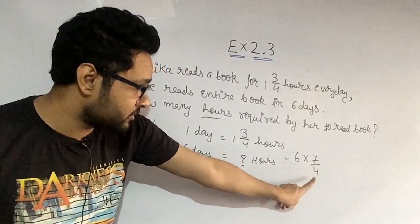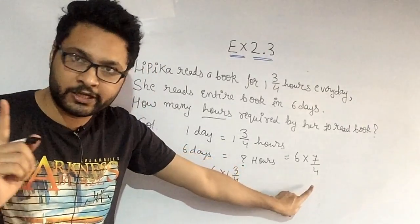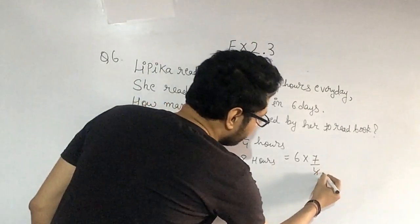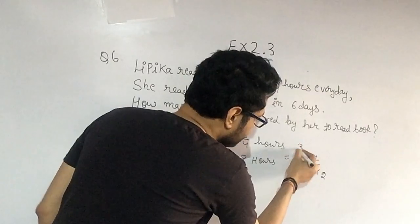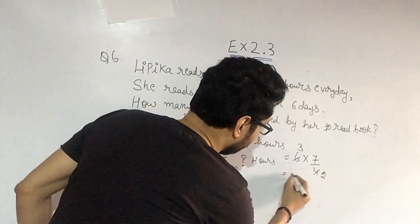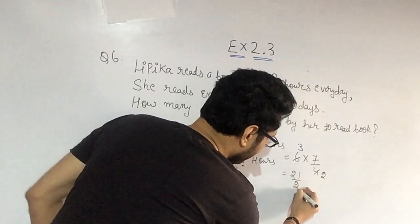Six into seven upon four. Now see, children, six and four, numerator and denominator, this will be cut. Two twos are four, two threes are six. How much did it become? Seven into three, how much? 21 upon two.